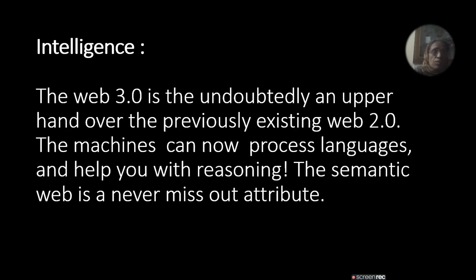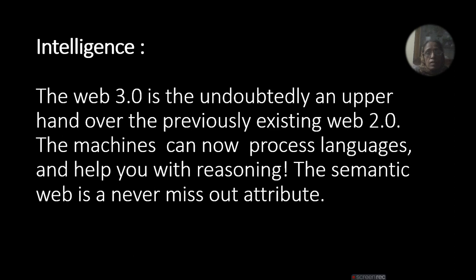Web 3.0 is undoubtedly an upper hand over the previously existing Web 2.0. Machines can now process language, helping with reasoning. The semantic web never misses out on attributes — you can process your language, reasoning, and semantic web attributes, meaning its properties.